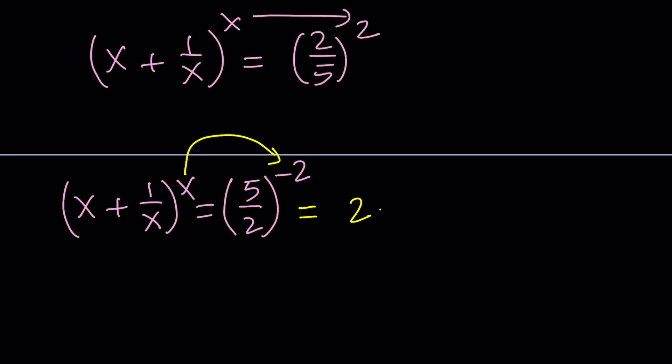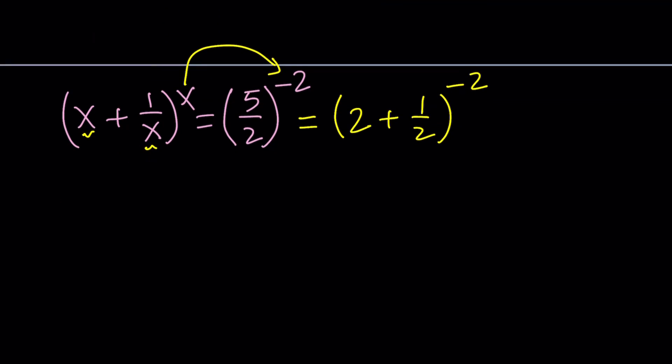5 halves can be written as 2 plus 1 half, and this almost does the trick. But notice that if x is negative 2, we are adding two positives, but that's not going to work because x is negative. So what are we supposed to do? Take advantage of the even powers.